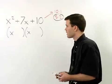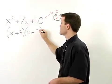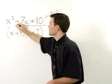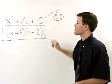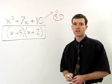So we'll put a 5 in the first binomial and a 2 in the second. And there's your answer, the factored version of x squared plus 7x plus 10.